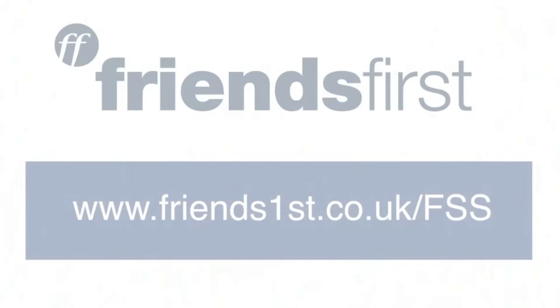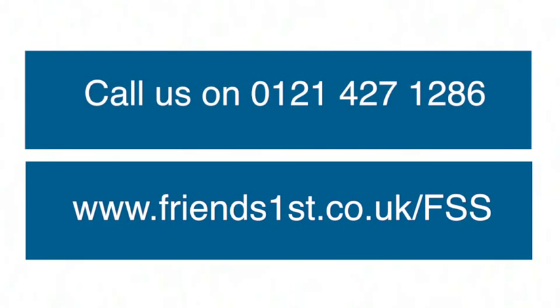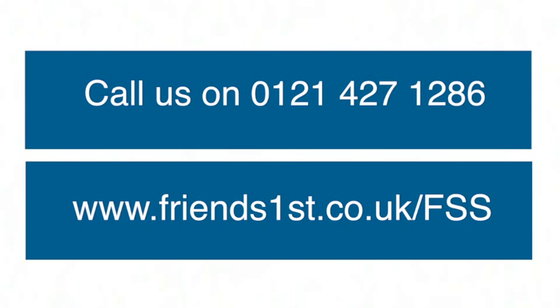There are three ways you can secure your own copy of the Finding Someone Special product. Complete the online order form at friendsfirst.com forward slash FSS or complete the printed order form we've sent you and mail it back using the pre-paid envelope that we sent out to you, but it does need to be here by next Monday morning. Or pick up the phone and call Nick or myself on 0121 427 1286 anytime Monday to Friday 9am to 5pm.